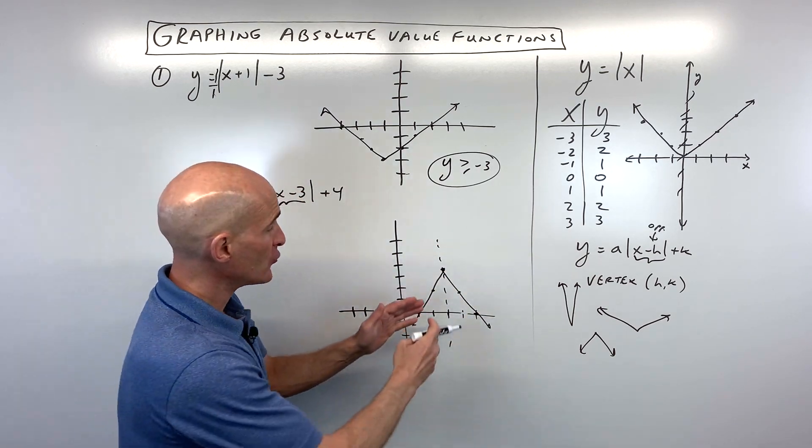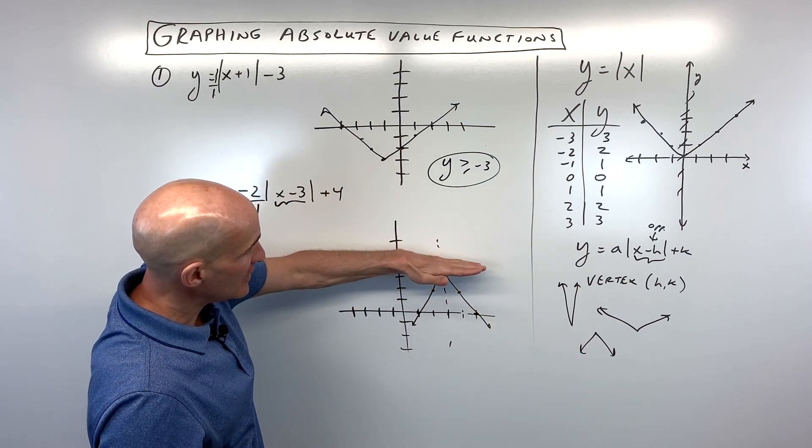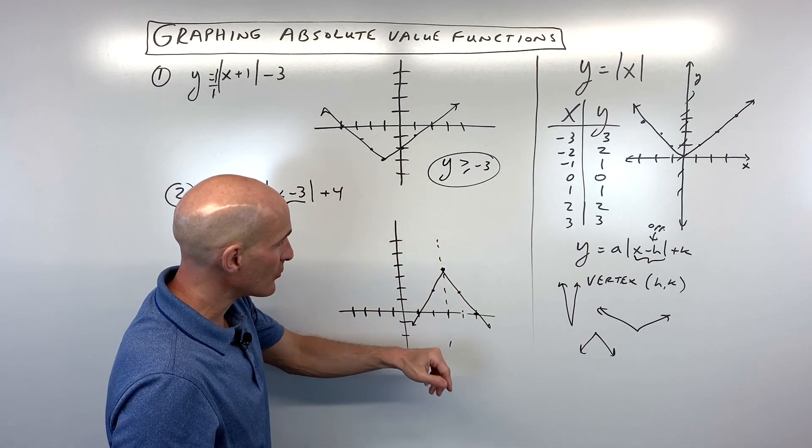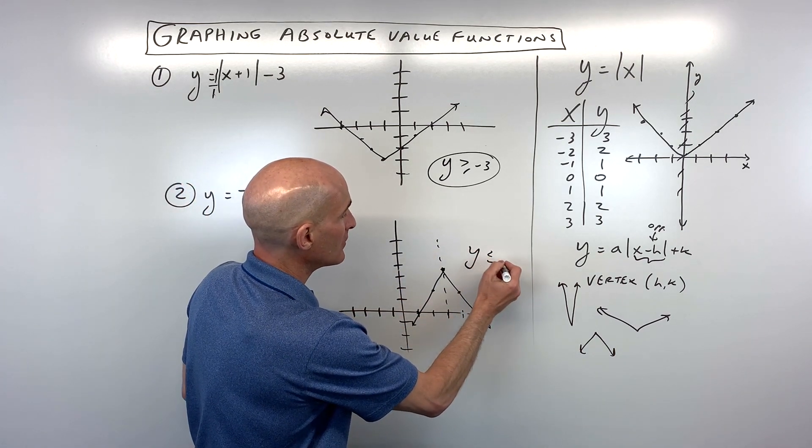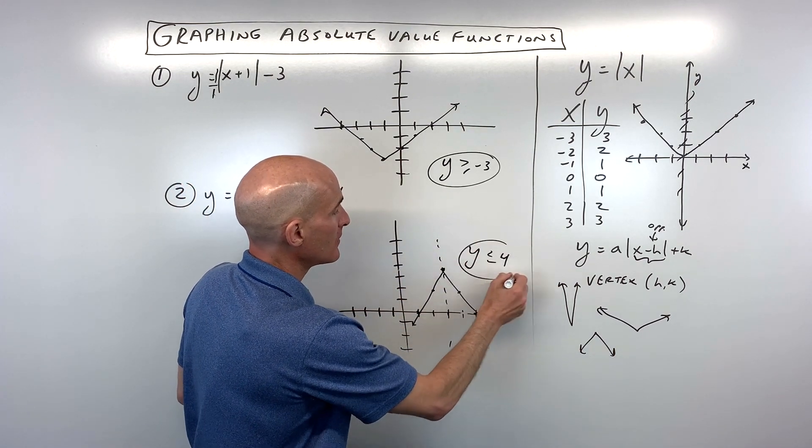But I'm then reflecting it over this axis of symmetry like that. So here on this one, again, the domain is all real numbers. The range is going to be y is less than or equal to four. See, four is the highest or below. So we'll just write that down, positive four. Okay, one more example.